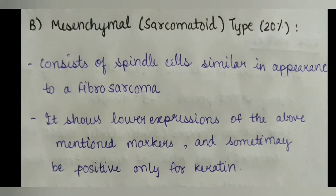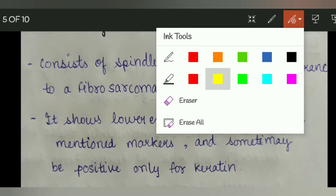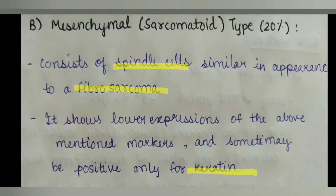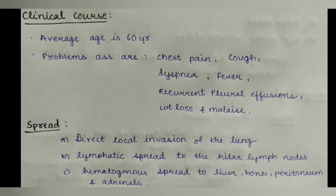The second type is the mesenchymal or sarcomatoid type, seen in 20% of patients. It consists of spindle cells similar in appearance to fibrosarcoma. It shows lower expression of the above-mentioned markers, and some cases may be positive only for keratin.